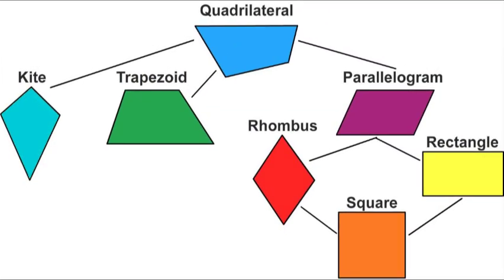Ready for the rest? Let's hear you sing along! Quadrilaterals — they are polygons. Quadrilaterals have four sides. We can classify them.